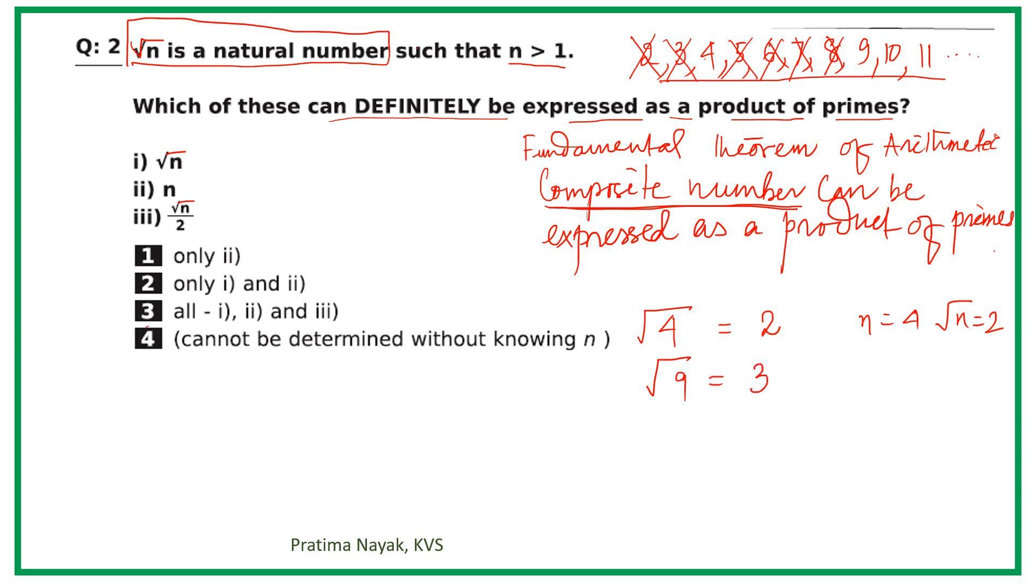So you are getting square root n as 2, 3, 4, 5, and so on. These are the square root of n. And n are what? n are 4, 9, 16, 25, and so on. So certainly all n are composite numbers.